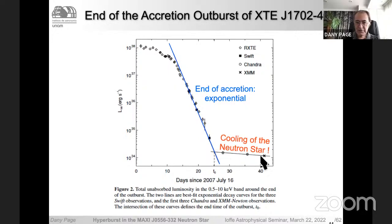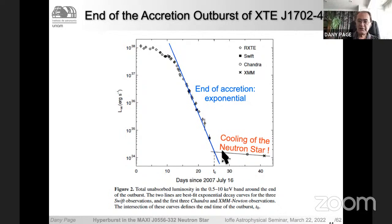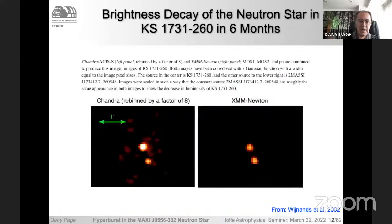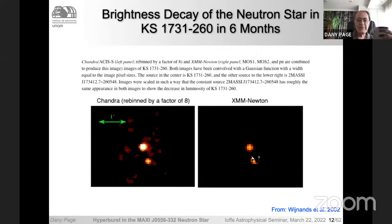Suddenly you see something with a completely different time behavior and different spectrum — clearly here we are seeing the surface of the neutron star with little or no accretion. For example, in KS 1731-260, from comparing Chandra and XMM-Newton data at six-month intervals, we clearly see the star getting fainter with time — an effect of the neutron star recovering from the perturbation.